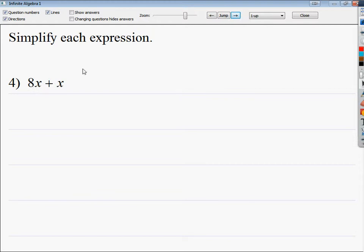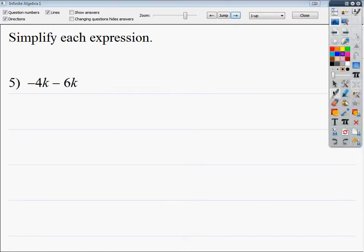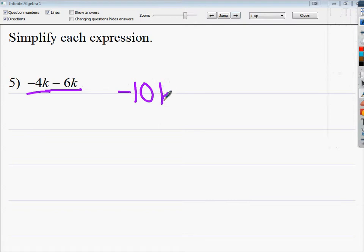This one would be 8 plus 1, so you get 9x for that one. And these are both negatives. My negative 4 minus 6, since they're both, I could mark both of them up, and I end up getting negative 10k here.